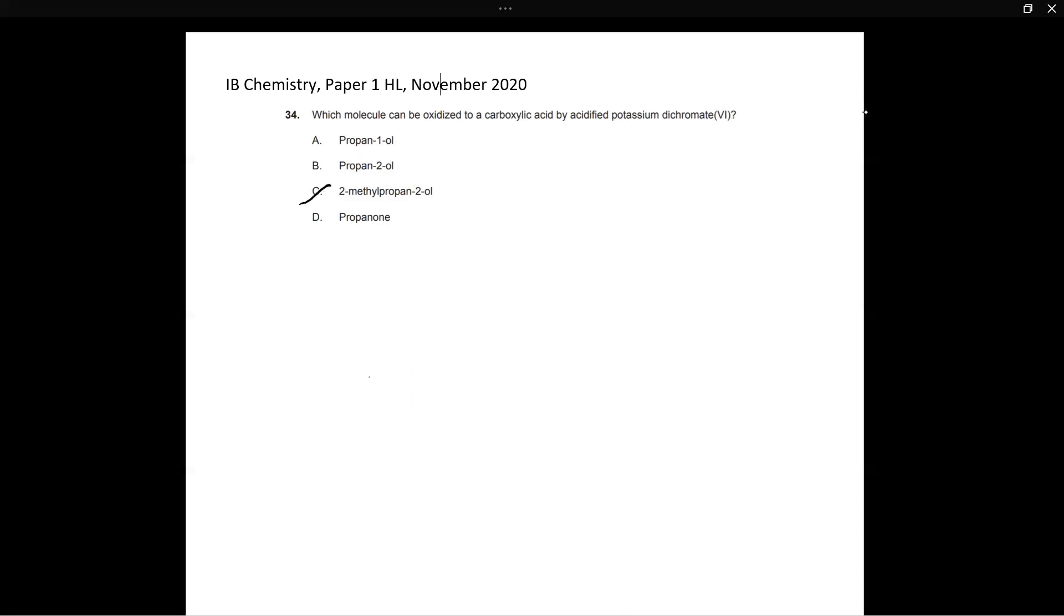Now let's look at D propanone. Let's draw the structure of propanone. So this is propanone. So as you can see, there is no hydroxyl group on this. This isn't even an alcohol. So this is also out.